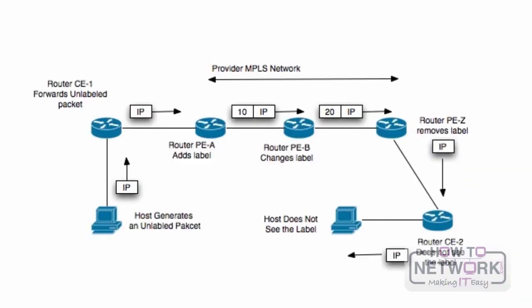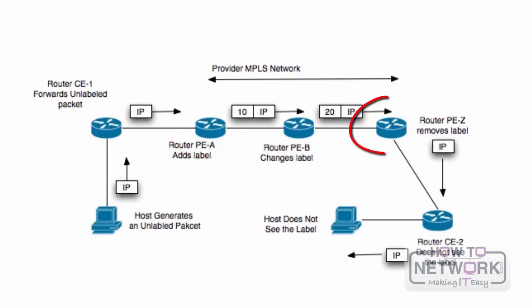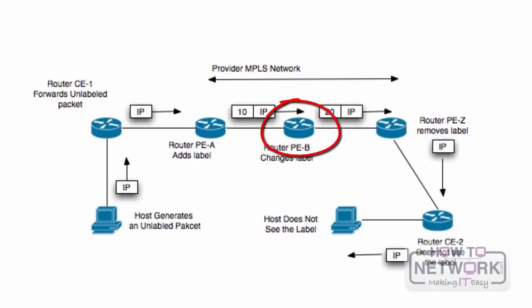One important issue that must be solved with MPLS is determining the devices that will ensure the insertion and removal of labels. The creation of labels is performed on the ingress edge LSR, and label removal is performed on the egress edge LSR. The LSRs in the interior of the MPLS topology are only responsible for label swapping in order to forward traffic on a specific path.